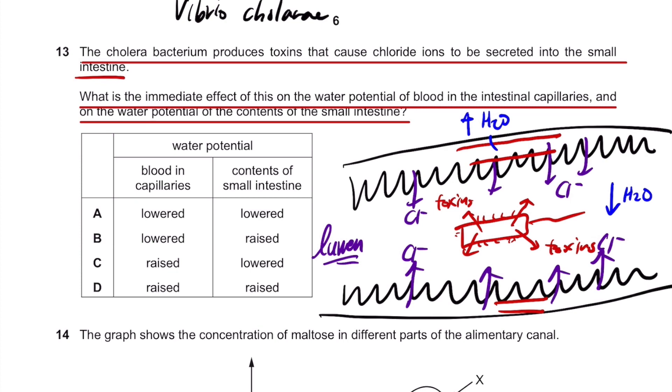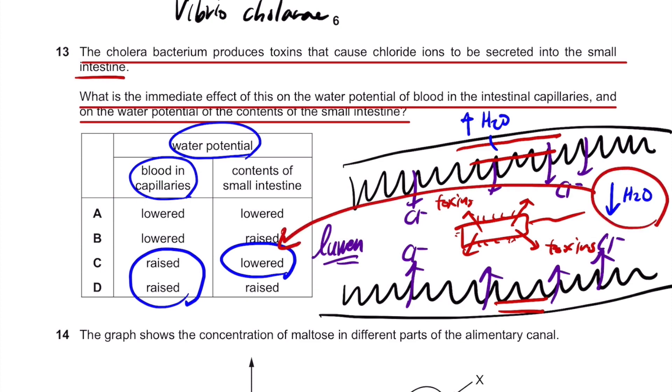So water potential in blood, in capillaries, becomes raised. And the contents, so the water potential of the contents of small intestine gets lowered. Hence, the answer is C.